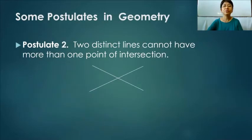Postulate two, two distinct lines cannot have more than one point of intersection. And this is pretty obvious.